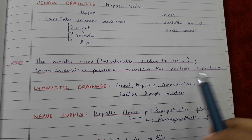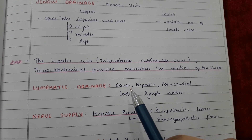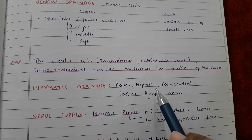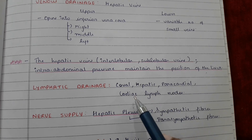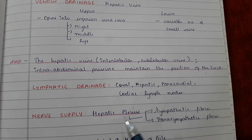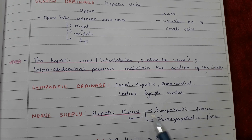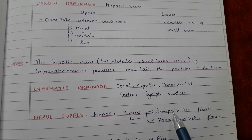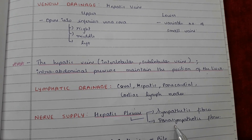Lymphatic drainage: the liver drains into the hepatic, pericardial, and celiac lymph nodes. Nerve supply is by the hepatic plexus, comprising sympathetic fibers and parasympathetic fibers.